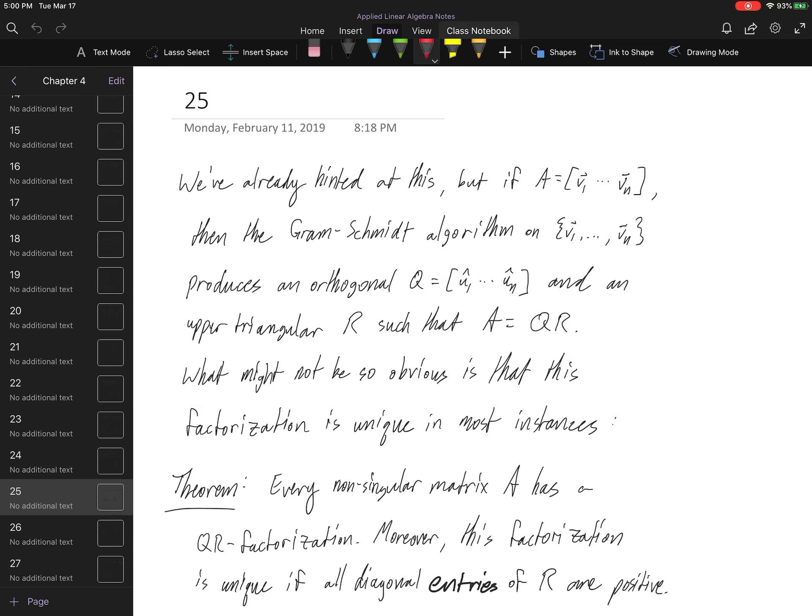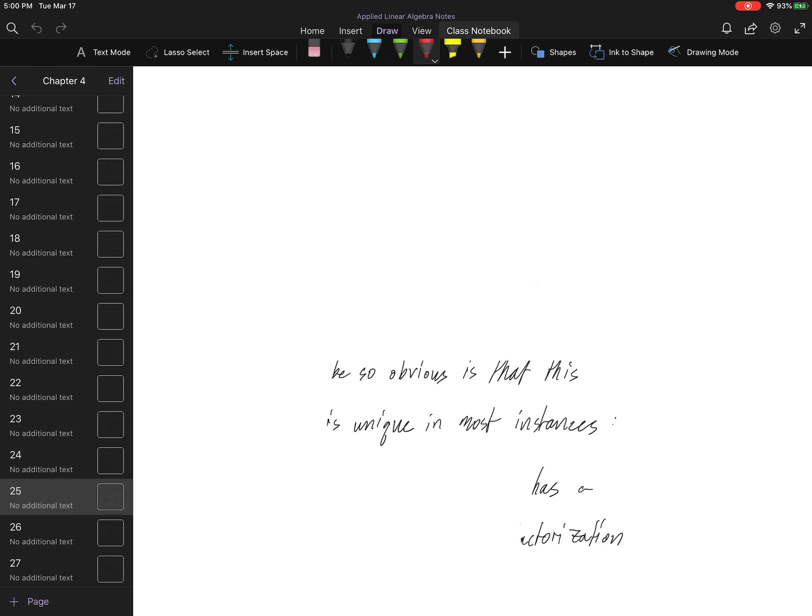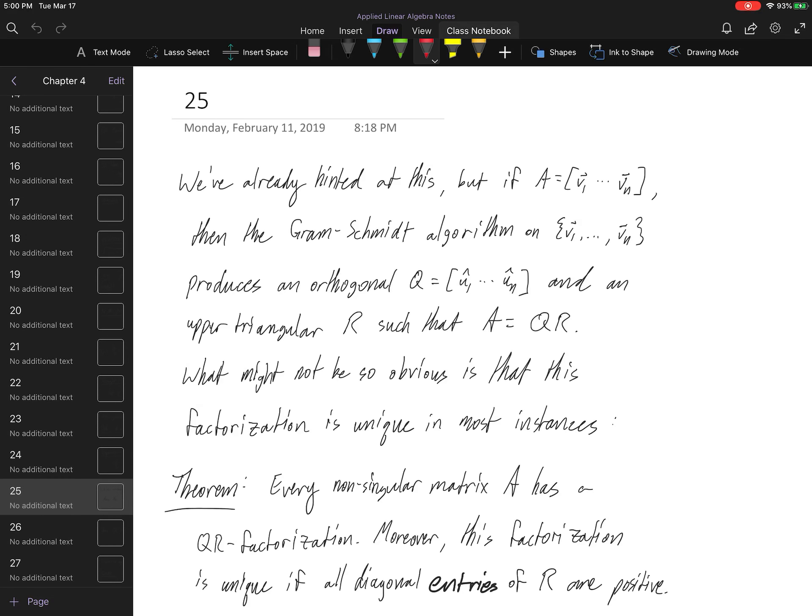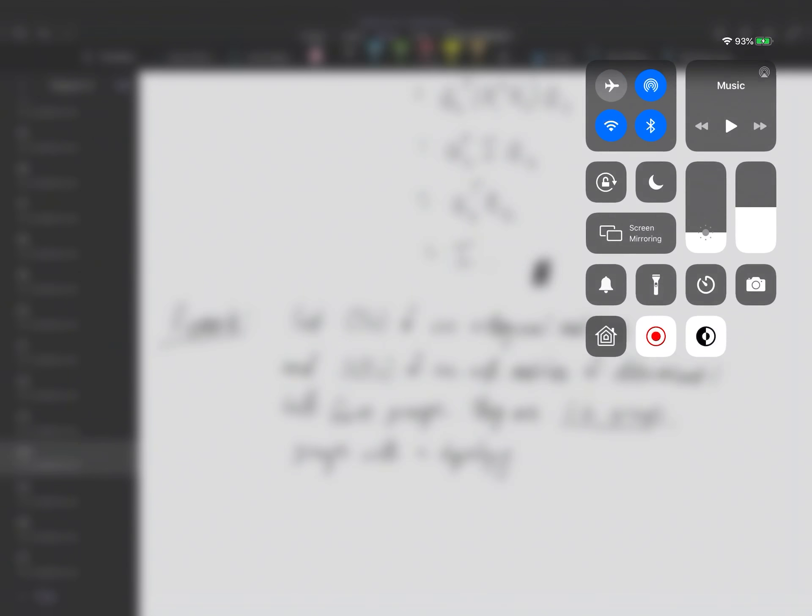But I think we're going to go ahead and kill this section of video. And next time, let's see, what are we doing next time? Aha! We're talking about uniqueness. Right? And possibly modifying the Gram-Schmidt algorithm so it performs in a unique fashion and in a way that it